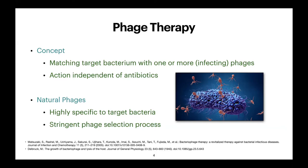Finding the right phage can be relatively hard because, as bacteria evolve, phages are also evolving. It's not easy to say 'this is the phage for that bacterium' because both are changing. We need some kind of phage selection process, which can be demanding in laboratory resources.